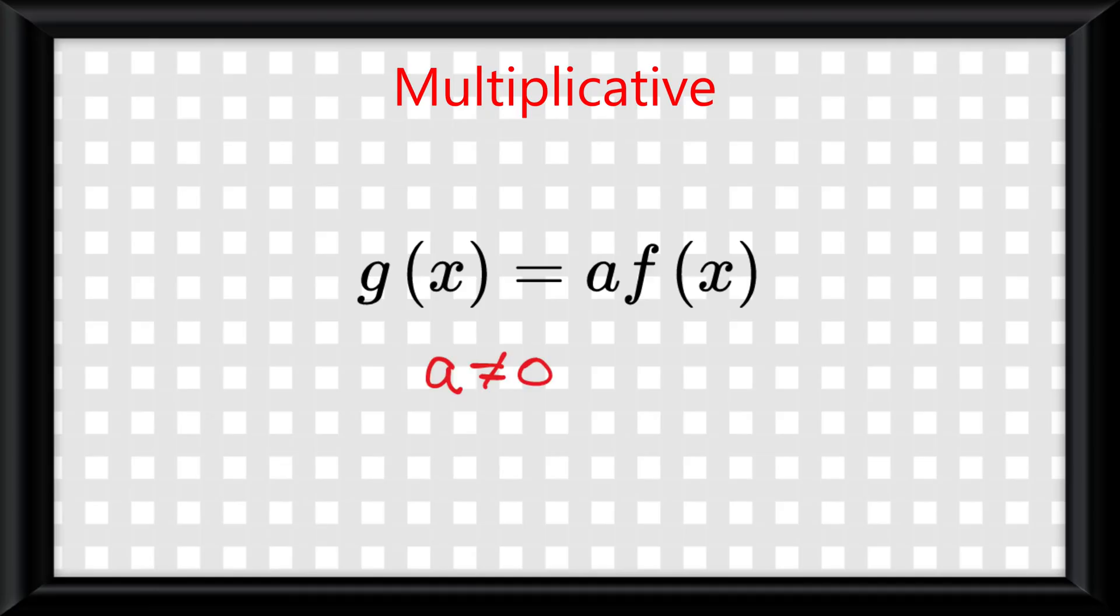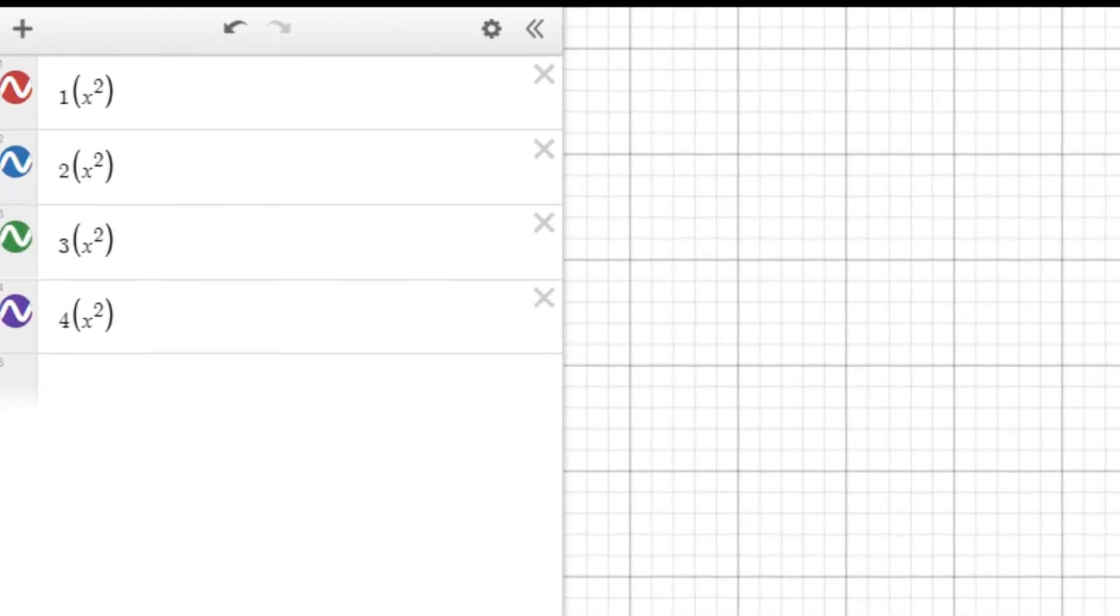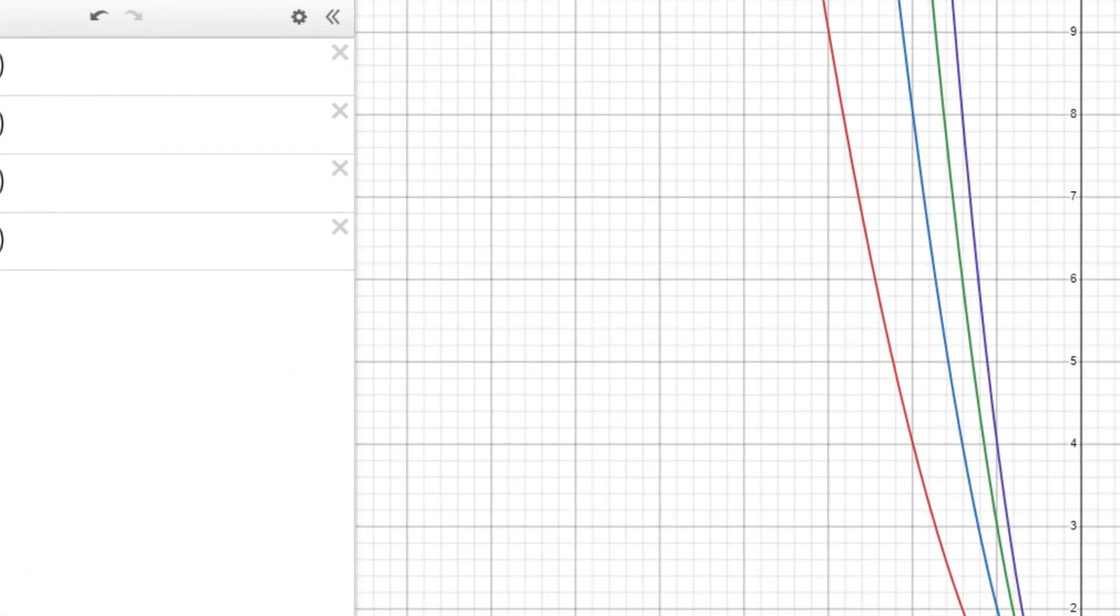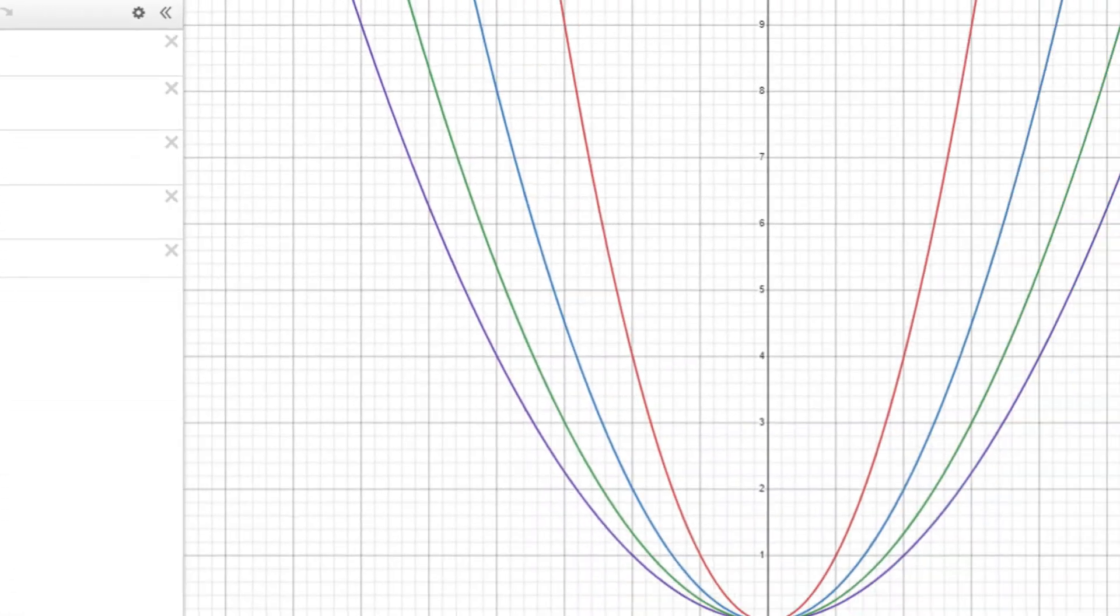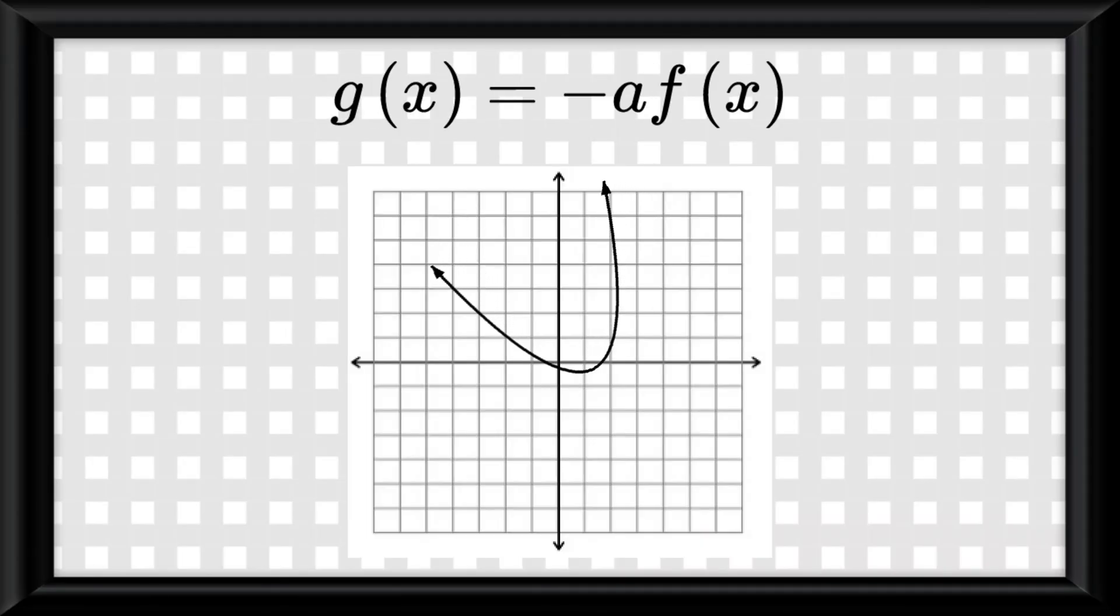Now for the multiplicative transformations. G of x equals a f of x when a is not 0 is a vertical dilation of the f graph. The higher the number gets, the more closed the graph will get. The lower the number, the more open it gets. If a is negative, it will result in a reflection of the entire graph over the x-axis.